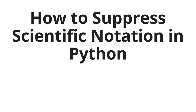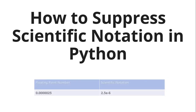Hey Pinksters, today we will be discussing how to suppress scientific notation in Python. Python represents very small or very large floating point numbers in their scientific notation by default. Suppressing the scientific notation represents these numbers in their decimal format. So let's have a look at a floating point number and its scientific notation.